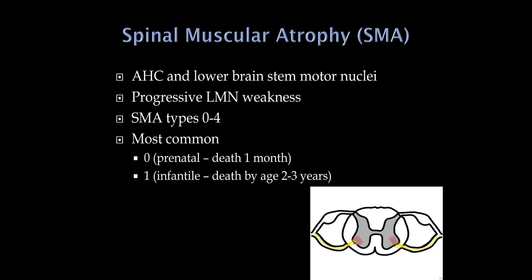For those doing pediatric neurology: there is an anterior horn cell disease called spinal muscular atrophy (SMA). Just like polio and ALS, it affects anterior horn cells in the spinal cord and also in the lower medulla. Children have progressive lower motor neuron findings. There are types 0 through 4: type 0 is the prenatal form with death usually within a month; SMA type 1 is infantile with death usually by two to three years - these are really horrible conditions. Type 4 is a rare adult-onset form. The genetics of these conditions go beyond the scope of what you need to know at this time.